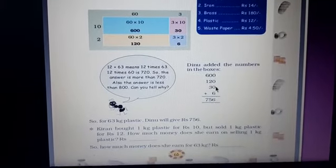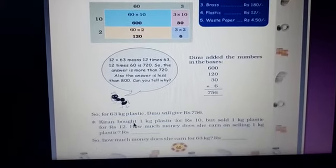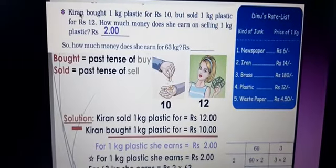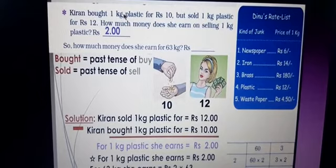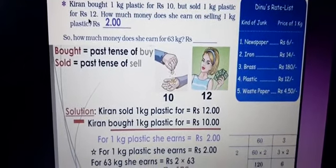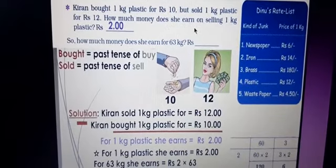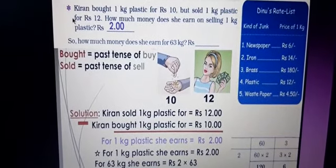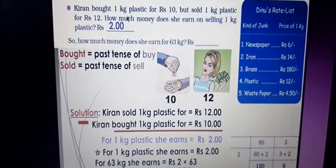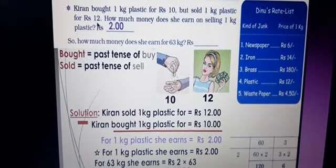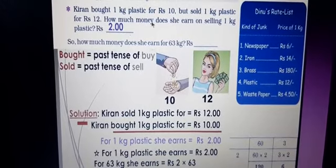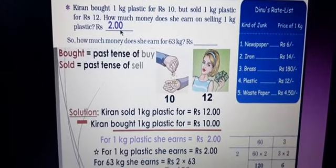Based on that, one more question is given. Kiran bought 1 kg plastic for Rs. 10 but sold 1 kg plastic for Rs. 12. How much money does she earn on selling 1 kg plastic? She can earn Rs. 2. Because she bought for 10 and sold for 12, the difference is 12 minus 10 equals 2. So she got Rs. 2 profit.